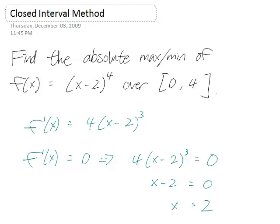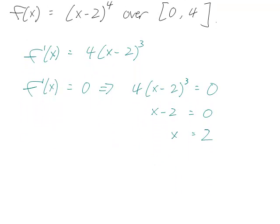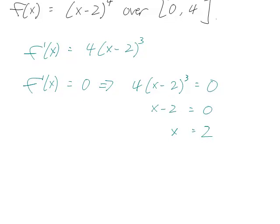You could just read it because 4(x-2)^3 is already factored - you could read off the solution x=2 from that. Now we have the critical point x=2, and we have our endpoints x=0 and x=4.